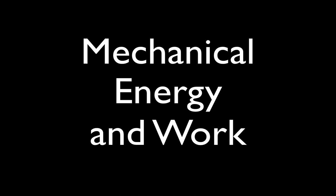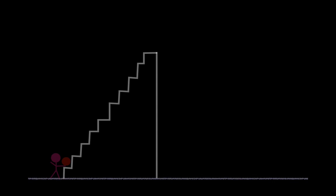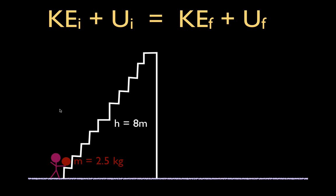In today's video we're going to go over a problem involving mechanical energy and work. We have this person, the pink person down here, they have this object here — maybe it's a ball. It has a mass of 2.5 kilograms, and the height of the stairs — not the length of the stairs, but the height — from the ground surface up to here is 8 meters. We want to answer the following three questions.